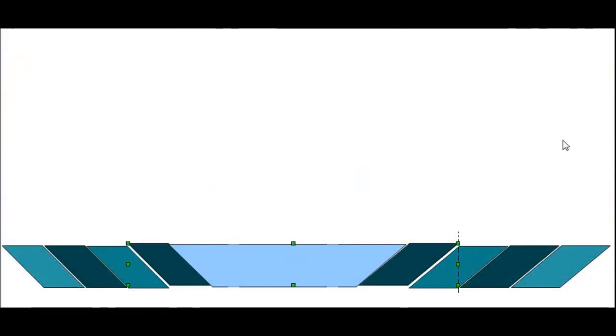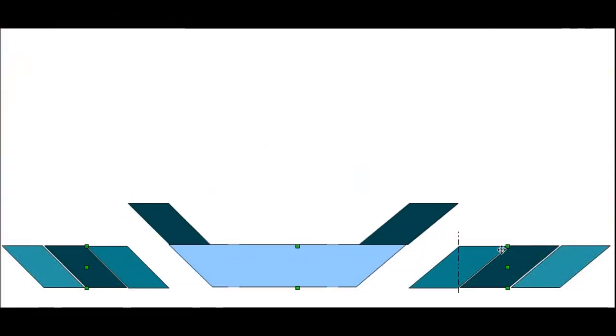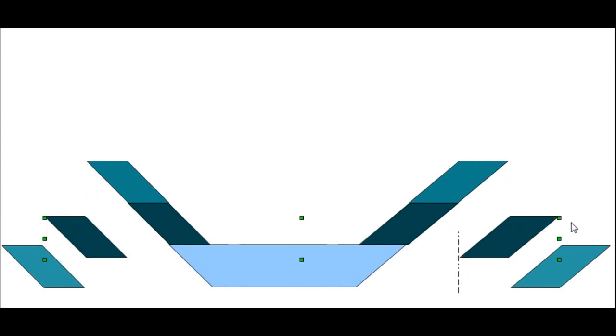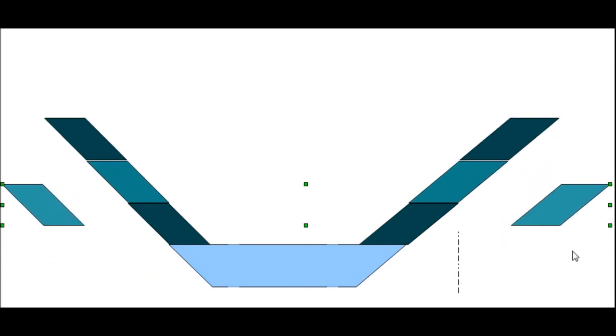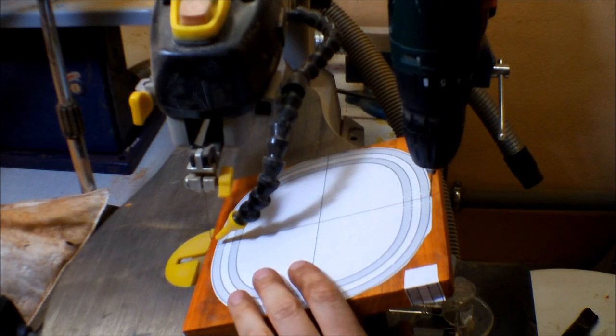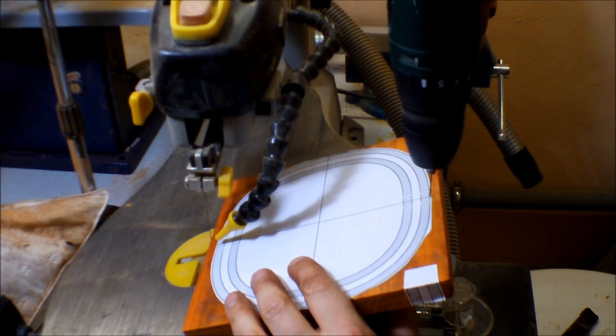Now when you cut the rings at the right angle you should be able to stack the rings on top of each other and you have a bowl. Now I need to drill the pilot holes at the same angle.